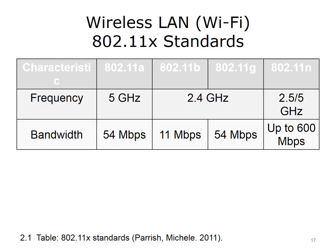Four standards for wireless technology are used today: 802.11 B, G, A, and the recently introduced N. B and G are compatible, and you will see equipment labeled B/G. Your equipment — wireless access point and NIC — must use the same standard in order to communicate with each other.